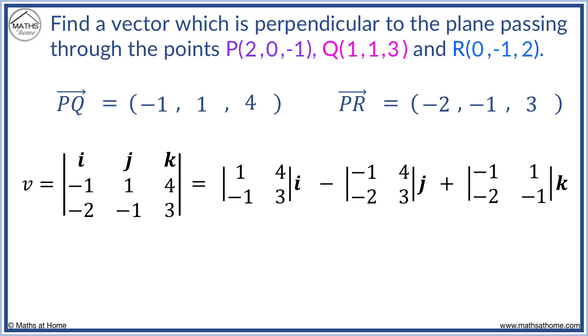Now we evaluate these determinants. We multiply the top left and bottom right, then subtract the top right multiplied by the bottom left. 1 times 3 equals 3, and we subtract -1 times 4, which equals -4.